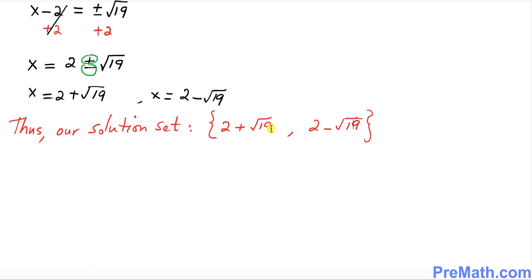But if you are interested in your solution in terms of decimal, then we can do that. You can use a calculator to figure out the square root of 19 is approximately equal to 4.36.